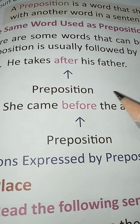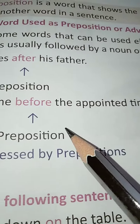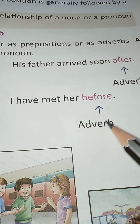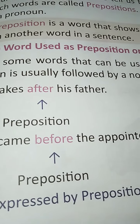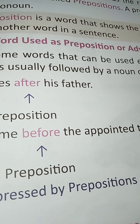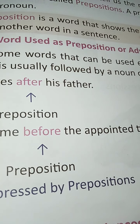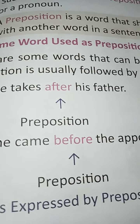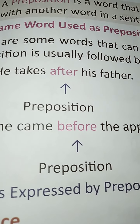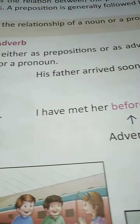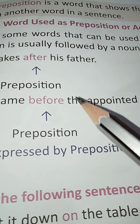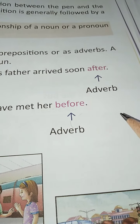For example: 'He takes after his father' — here, 'after' is a preposition. 'She came before the appointed time' — here, 'before' is a preposition. 'His father arrived soon after' — here, 'after' is an adverb. 'I have met before' — here, 'before' is an adverb. So some words are used as both prepositions and adverbs. The best way to identify: a preposition is followed by a noun or a pronoun, but an adverb is not followed by a noun or a pronoun.